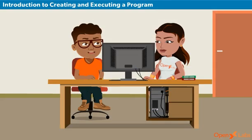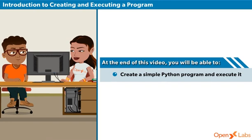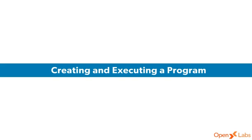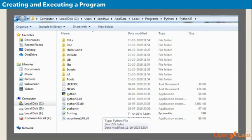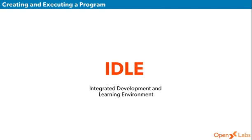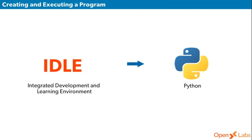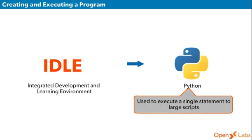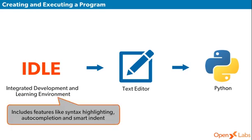That has stirred up my curiosity, so tell me how to create and execute a program. Okay Terry, now I'll explain to you how to create a simple Python program and execute it. A program in Python is simply a text file written in a certain coding language. The code inside a program file is called the source code. IDLE — Integrated Development and Learning Environment — is an IDE for Python, which can be used to execute a single statement to large scripts. IDLE provides a fully featured text editor to create Python scripts that includes features like syntax highlighting, auto-completion, and smart indent.